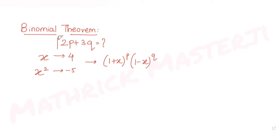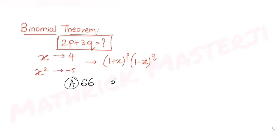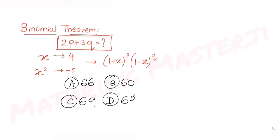We need to figure out the value of 2p plus 3q. The answer choices given are 66, 60, 69, and 63. We need to determine which one is correct.